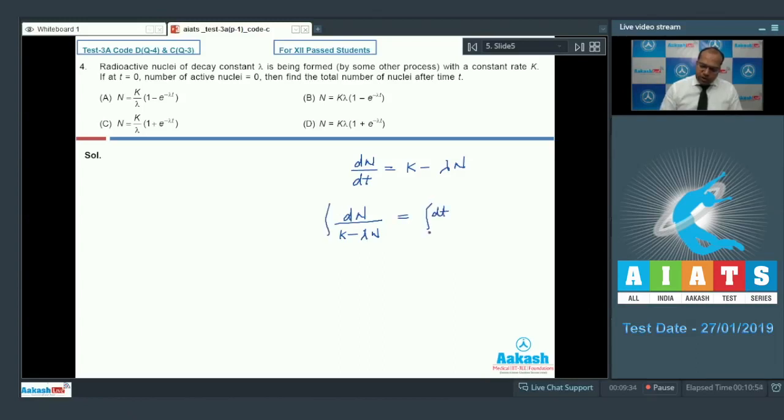So at T equal to 0 the number of active nuclei is 0, and at any time T the number of active nuclei is N. So if I solve this equation, then we will get N is equal to K by λ into 1 minus e to the power minus λ into T. So option A is the correct answer.